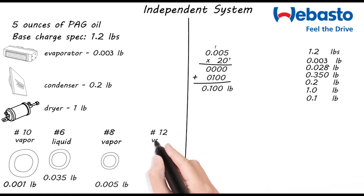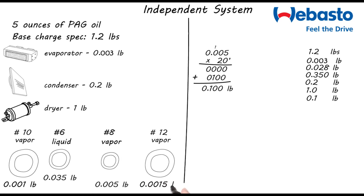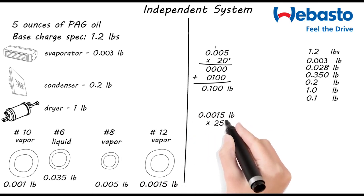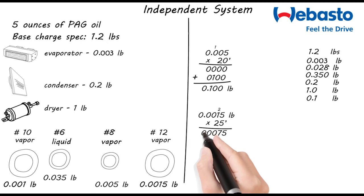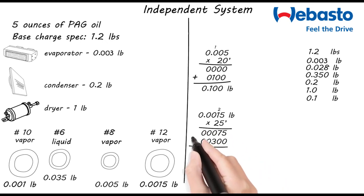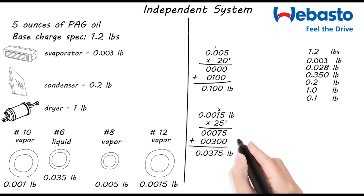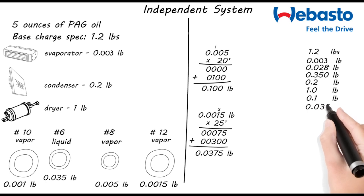We also have 25 feet of number 12 hose also on the vapor side of the system. We'll add 0.0015 pounds for each foot. That comes out to 0.0375 pounds. So we'll just round that up to 0.038.